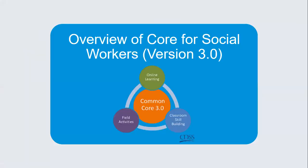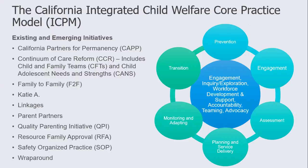Core for Social Workers was really built around the California Integrated Child Welfare Core Practice Model, otherwise known as ICPM. The core practice model includes all of the newest initiatives and practices used in California and is structured in a way that follows the continuum of child welfare: prevention, engagement, assessment, planning, service delivery, monitoring and adapting, and transition as that continuum of care with our families.